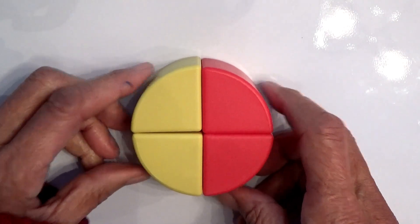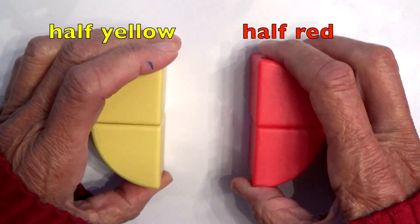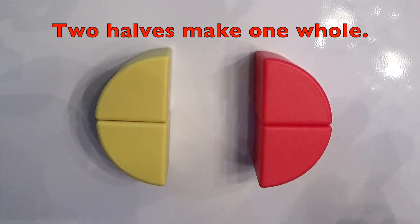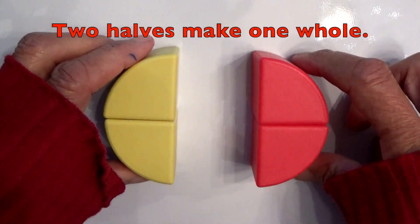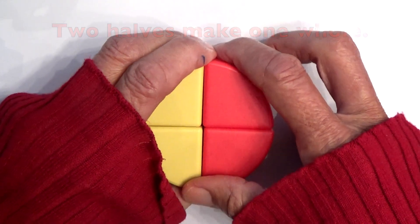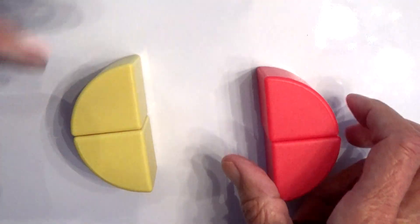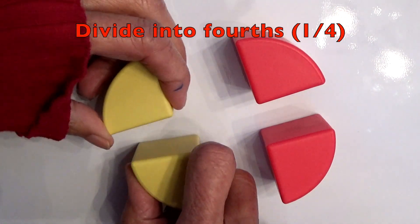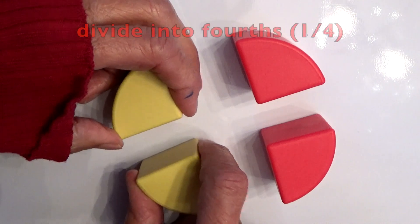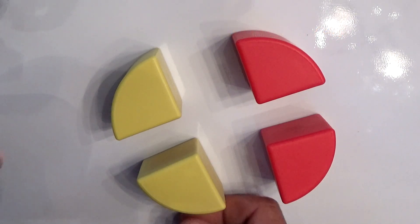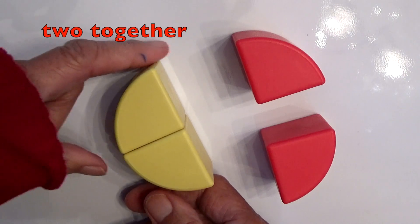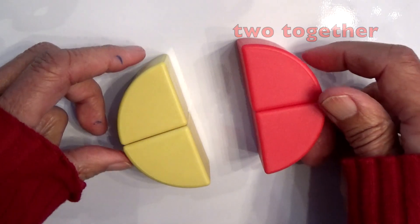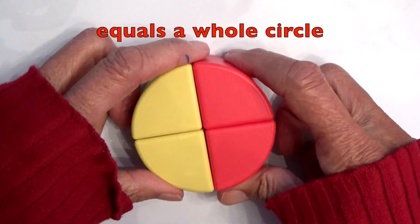Now, here we have a circle. Half of it is red, and the other half is yellow. So two halves make one whole. And watch this, divide it into fourths, fourths, and two together, two equal the whole, the whole circle.